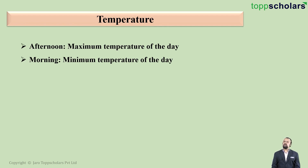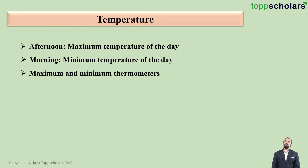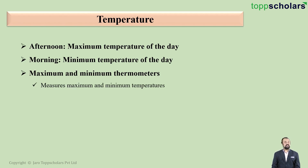There is an instrument known as the maximum and minimum thermometer. This instrument is U-shaped and it has two measuring structures. It measures both the maximum and the minimum temperature seen in the day.